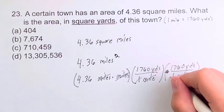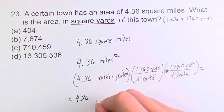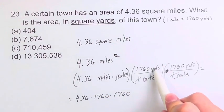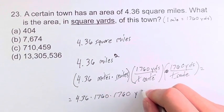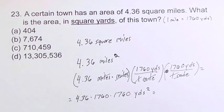These cancel out again. The one disappears again. And we get 4.36 times 1760, times 1760. Yards times yards is yards squared or square yards. And that is how we get from square miles to square yards. Just multiplying by once won't get you there.